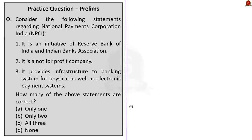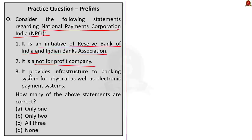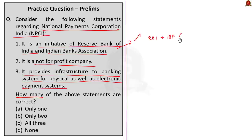Question number 2: Consider the following statements regarding National Payments Corporation of India. Statement 1: It is an initiative of Reserve Bank of India and Indian Banks' Association. Statement 2: It is a not-for-profit company. Statement 3: It provides infrastructure to the banking system for physical as well as electronic payment systems. How many of the above statements are correct? Statement 1 is correct — NPCI is the initiative of RBI and the Indian Banks' Association under the provisions of the Payment and Settlements Act of 2007. Statement 2 is also correct — NPCI is a not-for-profit company registered under Section 25 of the Companies Act 1956. Statement 3 is also correct. So the correct answer is option C, all three.